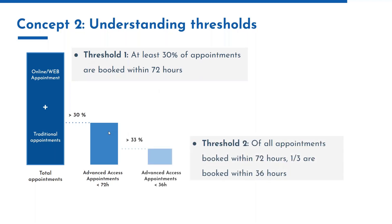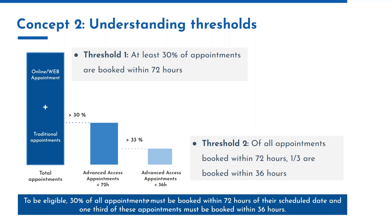Threshold two states that among all appointments given within 72 hours, one-third — so 33% — must be booked within 36 hours. So to be eligible for the incentives over the quarter, 30% of all appointments must be booked within 72 hours of their scheduled date, and one-third of those must be booked within 36 hours. Those are the two key concepts: what an advanced access appointment is and the corresponding thresholds.